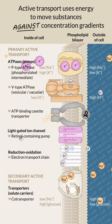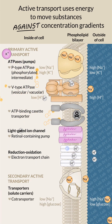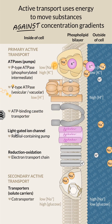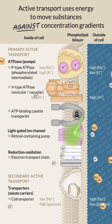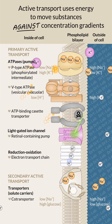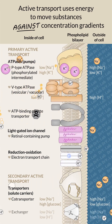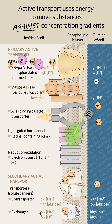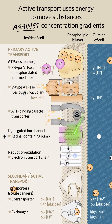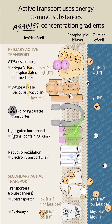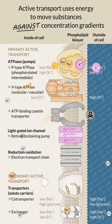The sodium-glucose co-transporter couples the spontaneous flow of sodium with the import of glucose and galactose into the cell. The sodium-hydrogen exchanger uses the sodium gradient to export hydrogen ions.